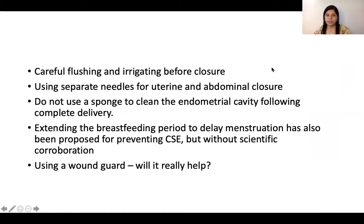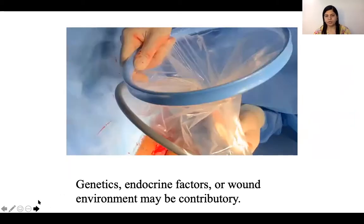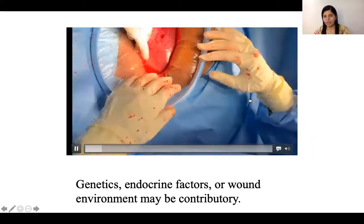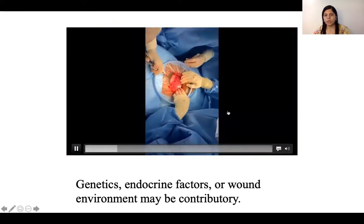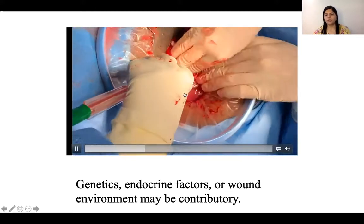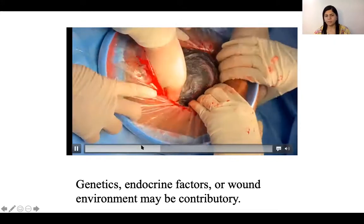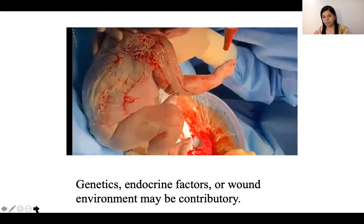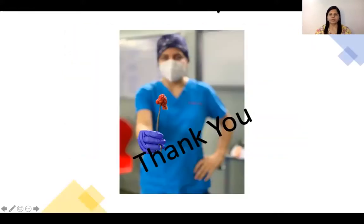To prevent scar endometriosis during cesarean section, recommendations include carefully flushing and irrigating before closure, using separate needles for uterine and abdominal closure, not using a sponge to clean the endometrial cavity following delivery, and extending breastfeeding to delay menstruation — though this lacks scientific corroboration. Using a wound guard during cesarean section has been proposed to prevent inoculation of endometrial tissue at the wound margins, but long-term studies are still needed to confirm whether it truly prevents scar endometriosis.